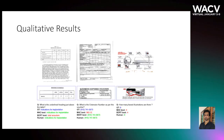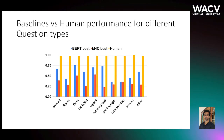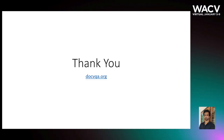Here are some qualitative results. Humans get the answer correct in all cases. In some cases M4C fails; in the first case BERT fails but M4C gets the answer correct, and in the second case BERT gets the answer correct but M4C fails. In the third case, the rightmost one, both models fail. We also show performance based on question types for both models compared to human performance, where human performance is notably higher. Thank you for listening. For dataset and challenge details and news on future challenges, please visit our portal at docvqa.org.